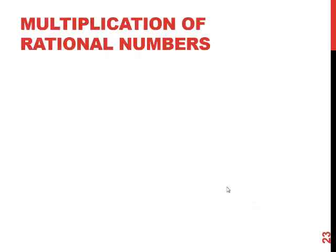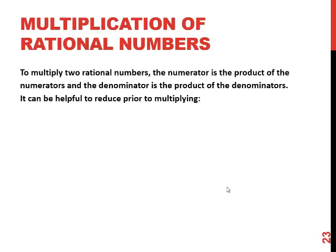Multiplication of rational numbers. Rational numbers are a little odd in one respect in that multiplication is actually easier than addition and subtraction with fractions. To multiply two rational numbers, the new numerator is going to be the product of the two numerators, and the new denominator is going to be the product of the two denominators. In other words, multiply straight across.